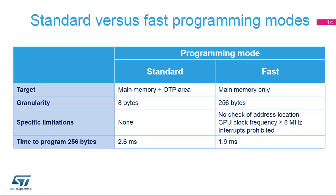This slide compares standard and fast programming modes. Standard mode can be used to program the main memory and OTP areas, while fast mode cannot be used for OTP programming. Standard mode allows programming 64-bit double words or 8 bytes, whereas fast mode only allows programming 32 double words or 256 bytes. In fast mode, the address location content is not checked before programming. The CPU clock frequency must be greater than 8 megahertz and interrupts are prohibited. It takes 2.6 milliseconds to program 256 bytes in standard mode and 1.9 milliseconds in fast mode.